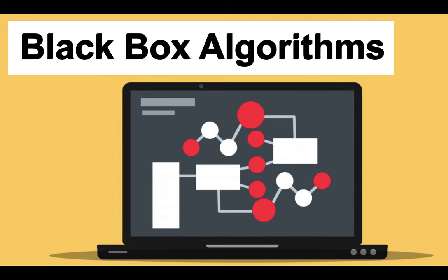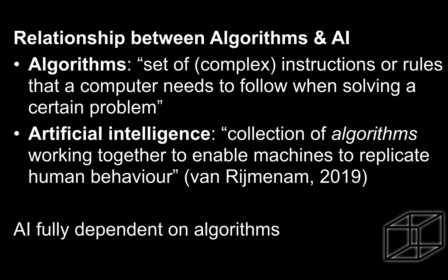Welcome back to this mini-lecture on black box algorithms. First off, I'm going to talk about the relation between algorithms and AI. Algorithms are a set of complex instructions or rules that a computer needs to follow when solving a certain problem. Artificial intelligence is a collection of algorithms working together to enable machines to replicate human behavior. As a result, AI is fully dependent on algorithms which make it up.